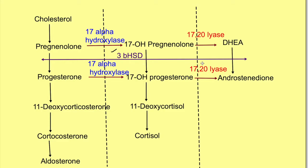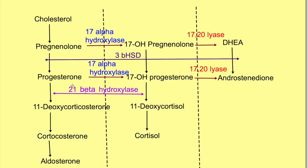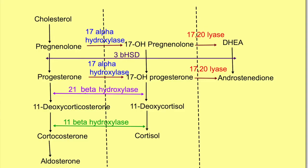Looking vertically, the same enzyme acts across all three parallel steps. For conversion of pregnenolone to progesterone, 17-hydroxy pregnenolone to 17-hydroxy progesterone, and DHEA to androstenedione, the enzyme is 3-beta hydroxysteroid dehydrogenase. Further down, for conversion of progesterone to 11-deoxycorticosterone and 17-hydroxy progesterone to 11-deoxycortisol, the enzyme is 21-beta hydroxylase. The next step uses 11-beta hydroxylase.